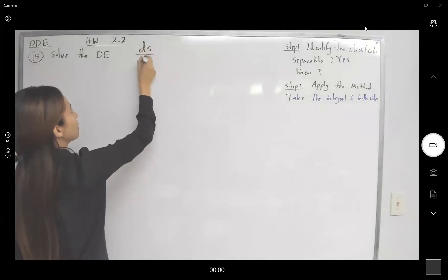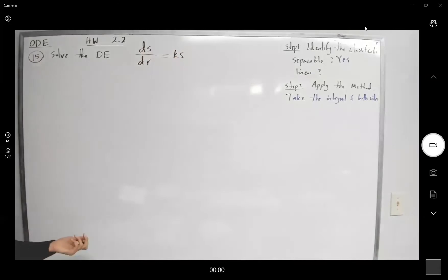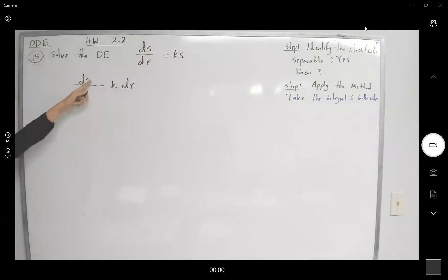ds over dr is equal to k times s. Is it separable? Here you get ds divided by s equals to k dr. Here you have s now on the denominator. So since it's separable, you can take the integral.